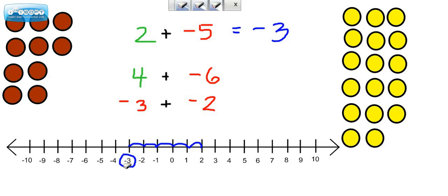Let's take a look at the next one that I have, which is 4 plus negative 6. 4 would be here on the number line. Negative 6 means go left 6 on the number line.